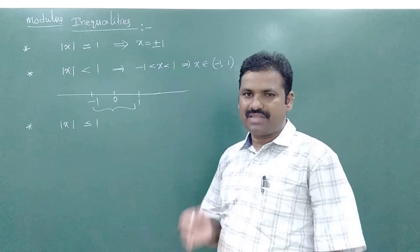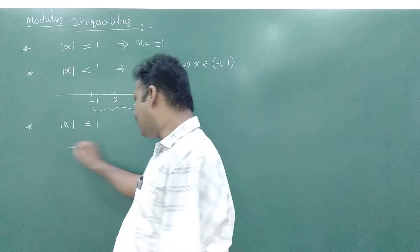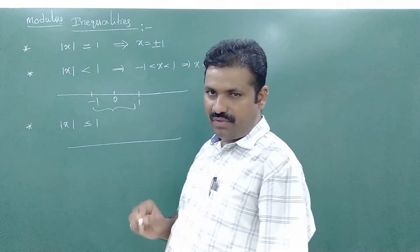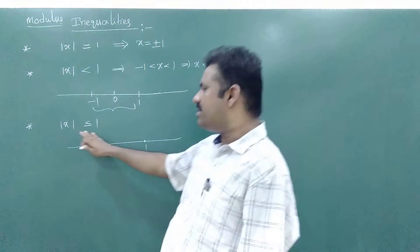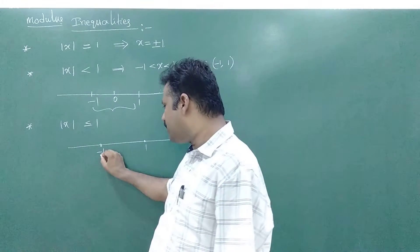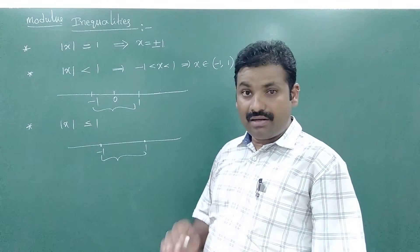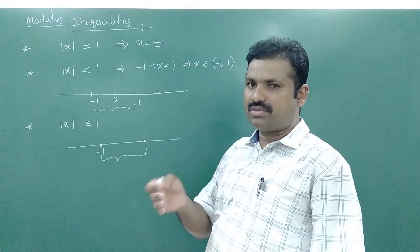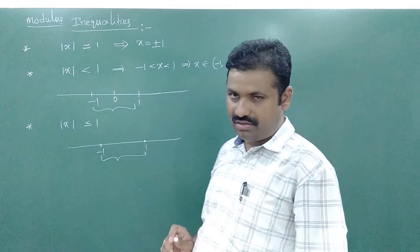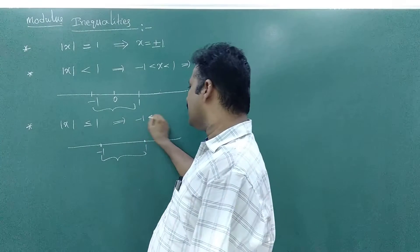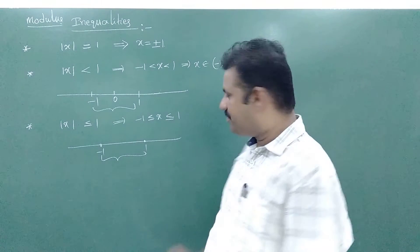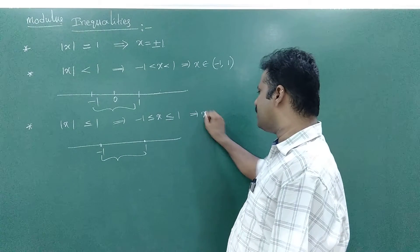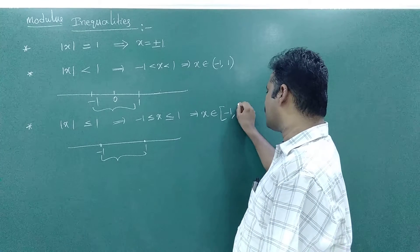Next: mod x less than or equal to 1. What are the numbers satisfying this inequality? When mod x equals 1, x equals plus or minus 1. All the numbers in between minus 1 and 1, and also the endpoints minus 1 and 1, satisfy this. So that means minus 1 less than or equal to x less than or equal to 1, which means x belongs to the closed interval minus 1 comma 1.